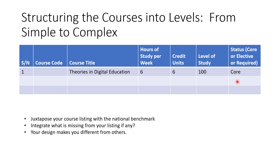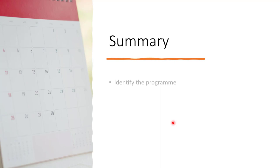Start with your own program design first — don't start with the benchmark — because this is what will differentiate you from other universities and programs. Recently, with the 30% allowance given, they expect you to distinguish yourself. For accreditation, if any benchmark course is not in your list, find where it fits in your design. Some of those courses may fall under a module rather than a standalone course. What NUC is after when they come for accreditation is to ensure that the knowledge is being covered and nothing is missing, while your design makes you stand out.